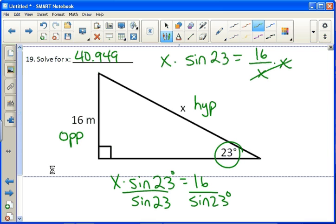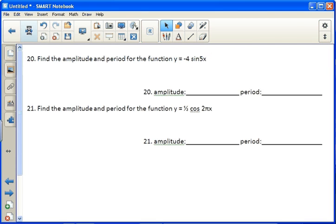Okay, number 20, find the amplitude and the period for the function. So remember, we're going to call the number in front of the whole thing, a, and the number in front of just the x, b. To get the amplitude, we just look at the absolute value of a. So amplitude is always positive. So in this case, it's 4. And in number 21, it's 1 half. Because it's just the absolute value of the number out front.